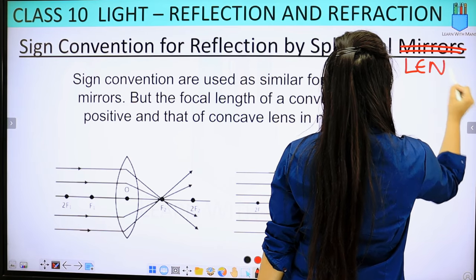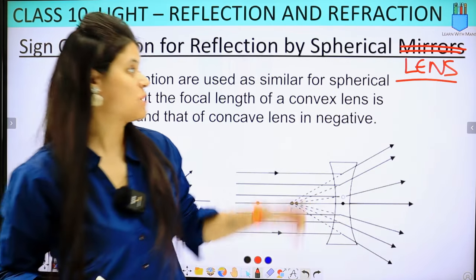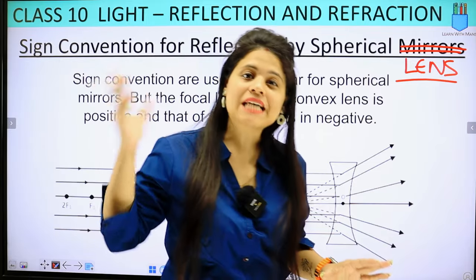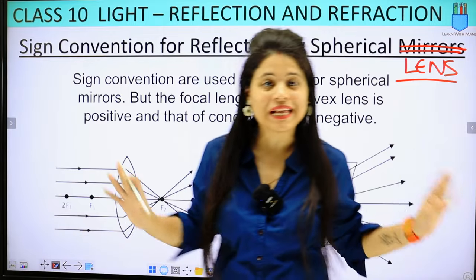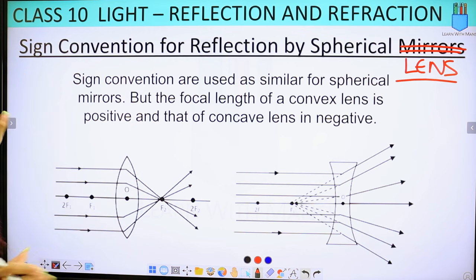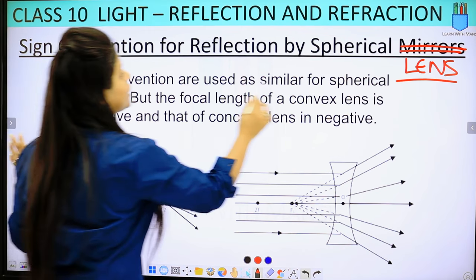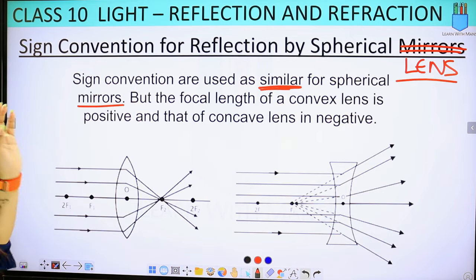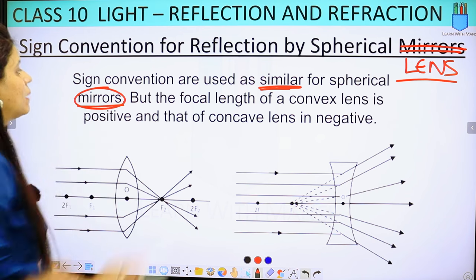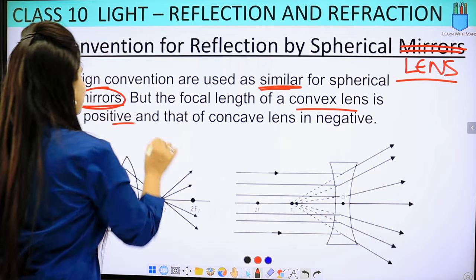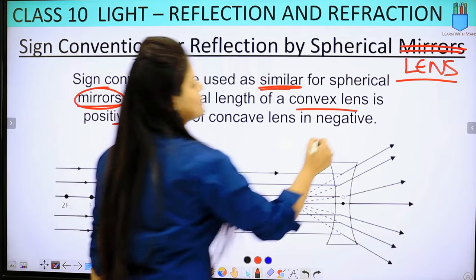Our topic is sign convention for lenses. As we have studied in the mirror, all signs are the same for lenses. The only difference is the focal length. Sign conventions are used as similar for spherical mirrors, but the focal length of a convex lens is positive and that of the concave lens is negative.